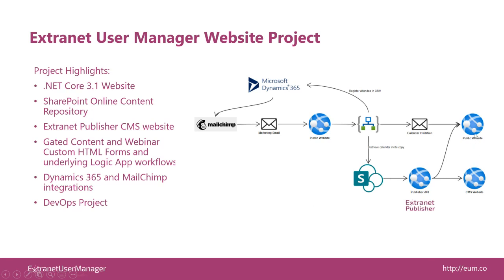We actually have two versions of the site: the public website you go to, and a CMS version we use for content authoring. There's an API that publishes content from SharePoint Online to those two sites, with Logic Apps for submitting changes, approving them, and managing the whole content creation process. As a site visitor, you probably responded to a MailChimp email, came to the form, and clicked the link to register. We put some smarts in that link to pre-populate the form. When you submit, it goes to an Azure Logic App that checks if you're in our Dynamics 365, adds you as a new lead if not, updates the mailing list, and sends out a calendar invitation.